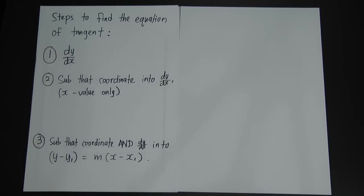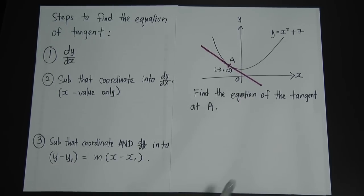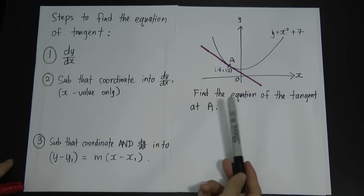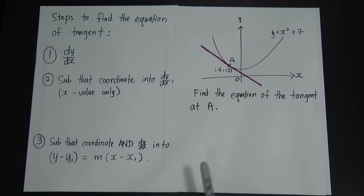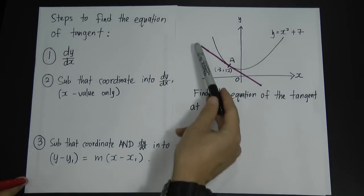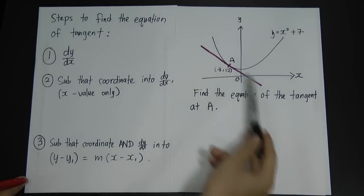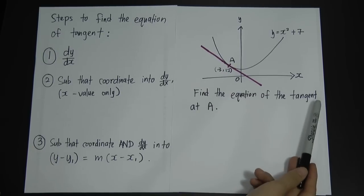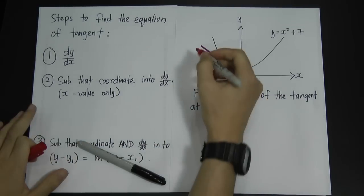Let me show how this works with a simple example. I have a curve, and the question says find the equation of the tangent at point A. Tangent means this line actually touches the curve at one point, which is point A — we call it the tangent. So finding the equation of tangent means finding the equation for this straight line, which is the tangent line.